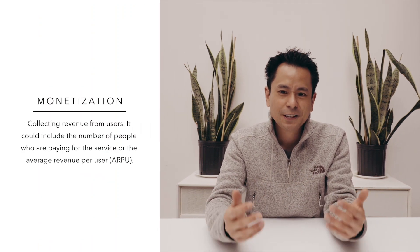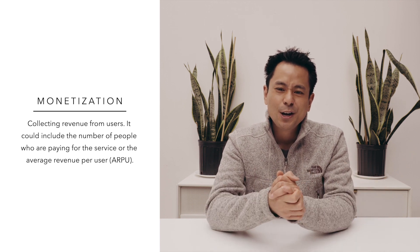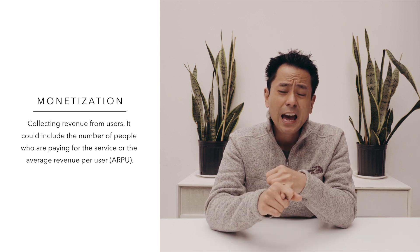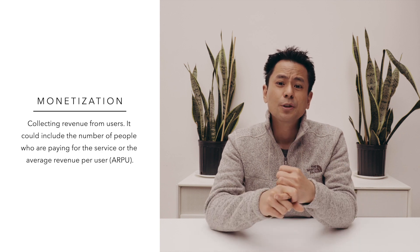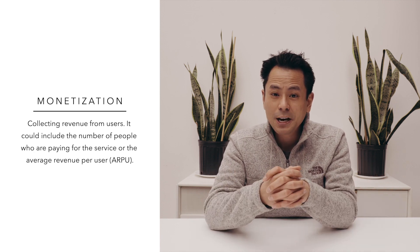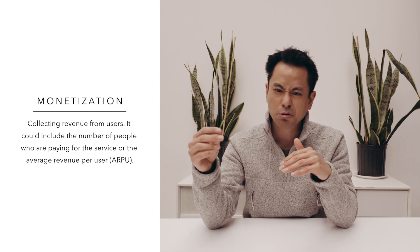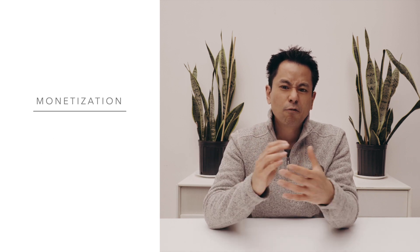And then the last piece to think about is monetization. It's great that they're using the product, but clearly we have to make money somehow. When it comes to monetization, there are a lot of different metrics to think about. You can think about average revenue per user, which is called ARPU. You can think about conversion rates, which can be defined in a lot of different ways. For B2C e-commerce companies, conversion rates can be defined as the percentage of website users that go on to make a purchase, which is usually about 2% to 3%. For a B2B website like Salesforce.com, it could be the percentage of website visitors that go on to sign up for a webinar, or the percentage of website visitors that go on to download a white paper.